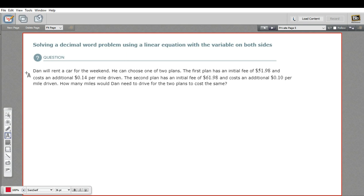The question says: Dan will rent a car for the weekend. He can choose one of two plans. The first plan has an initial fee of $51.98 and costs 14 cents per mile driven. The second plan has an initial fee of $61.98 and costs an additional 10 cents per mile driven. How many miles would Dan need to drive for the two plans to cost the same? This is the kind of real-world problem you might actually face sometimes.